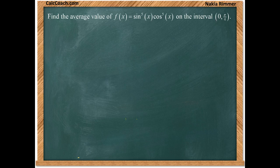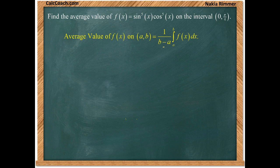The formula for the average value of a function is to integrate the function and divide by the length of the interval. So we'll divide by b minus a, where a is zero and b is pi over four.